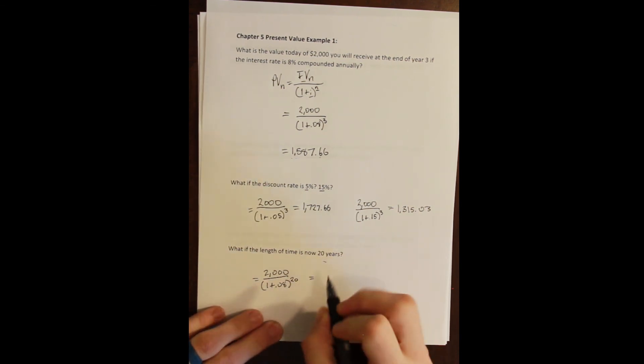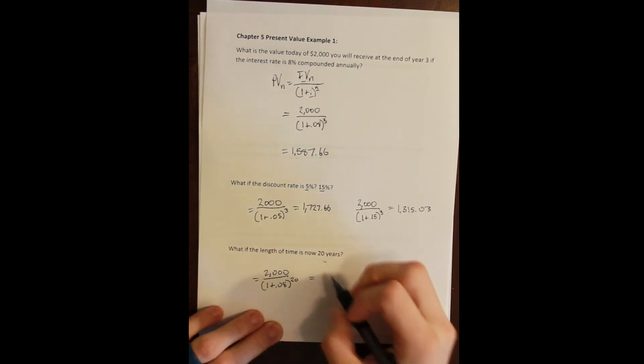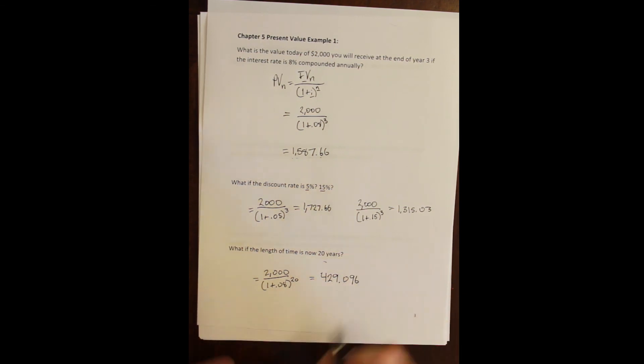And you can see that because the time difference is so large, 3 to 20, the difference in the present value is similarly large. And we only need to start with $429.09 in this account in order for it to turn into $2,000 if it can earn 8% for 20 years instead of 3.